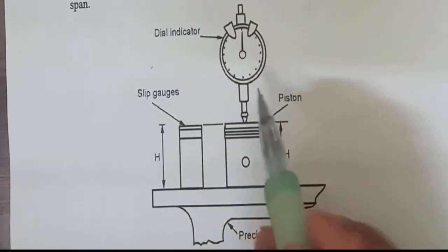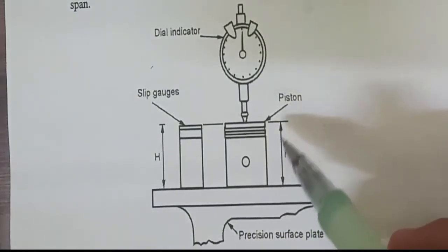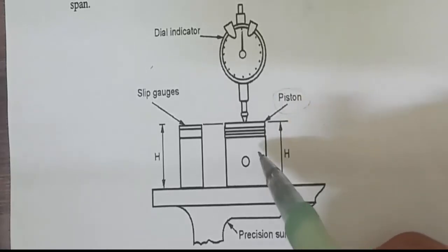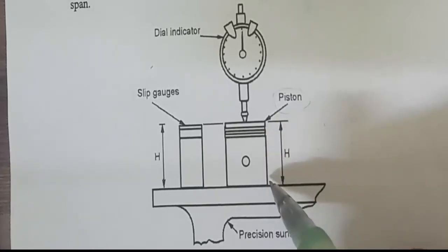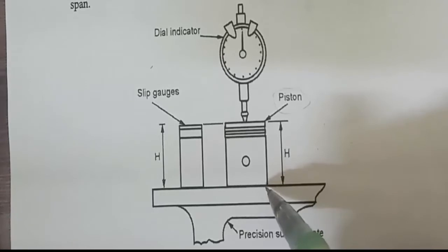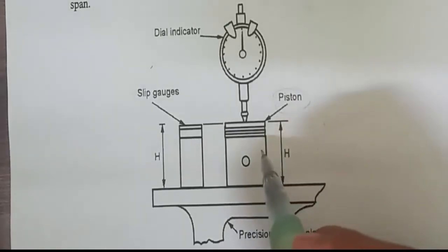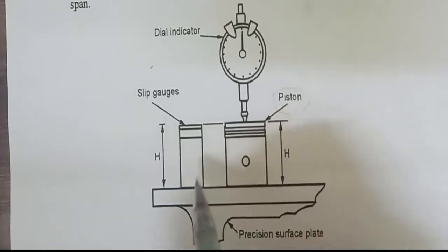Now, the need of the comparator — let me give you one example. Suppose a piston is given and if this piston is in mass production, then I have to check each and every piston height. If I use the Vernier Caliper, it will take very long time to check each and every piston.